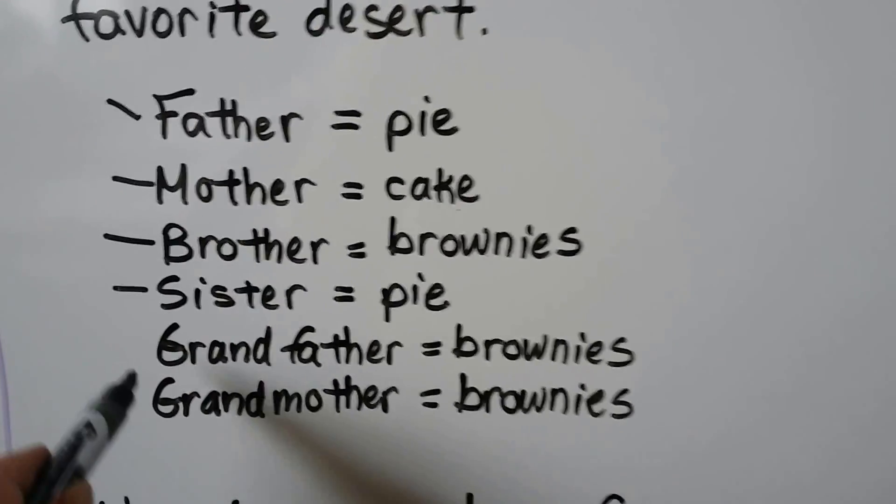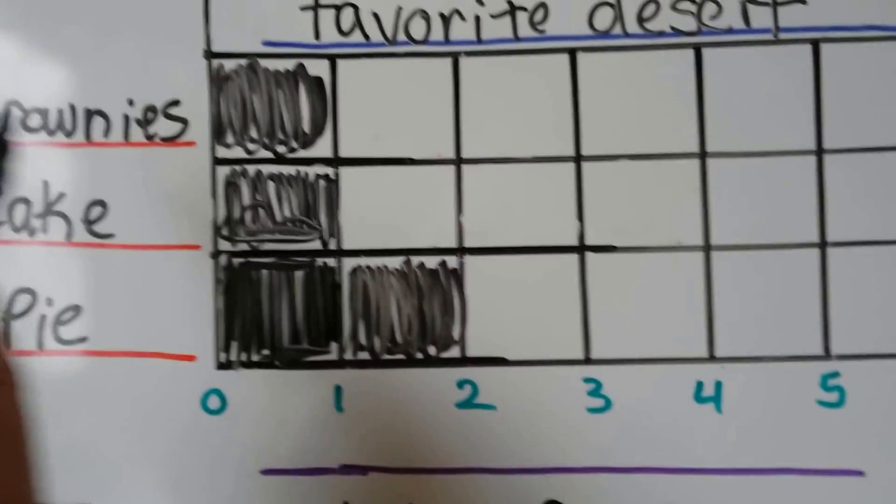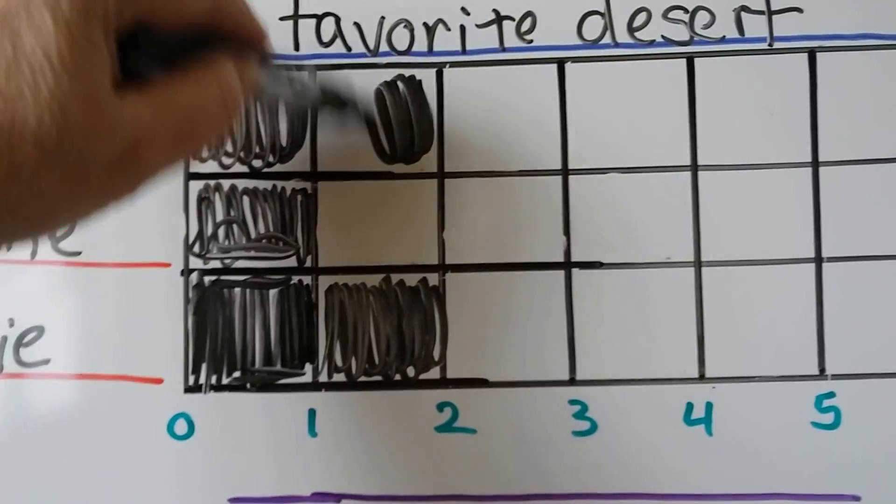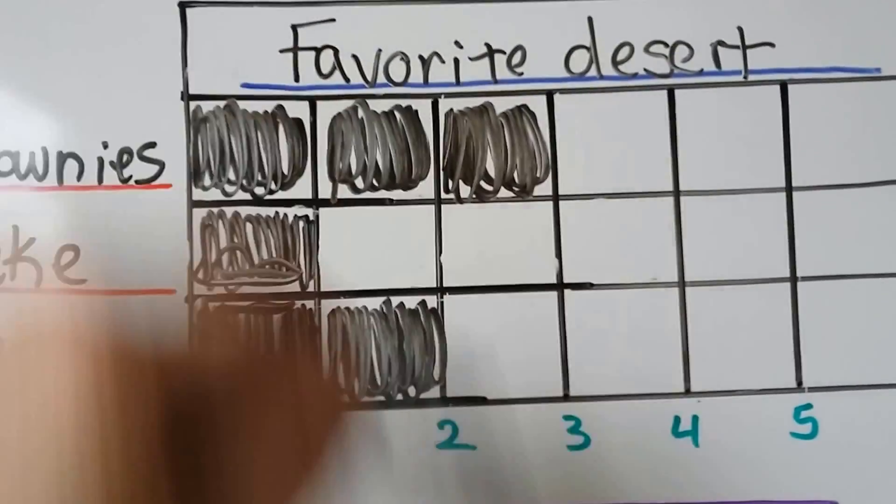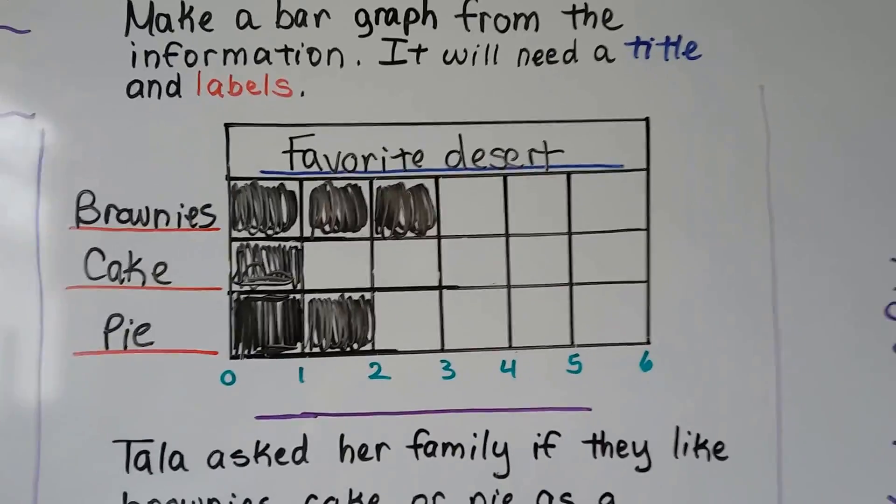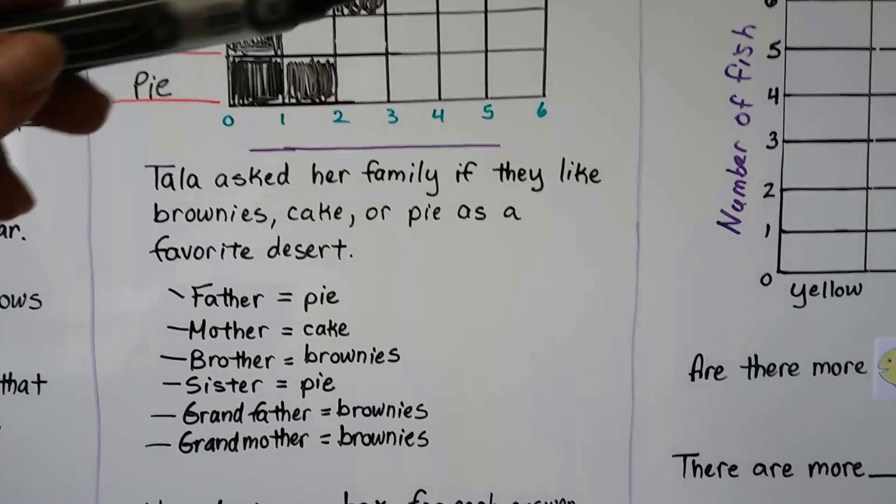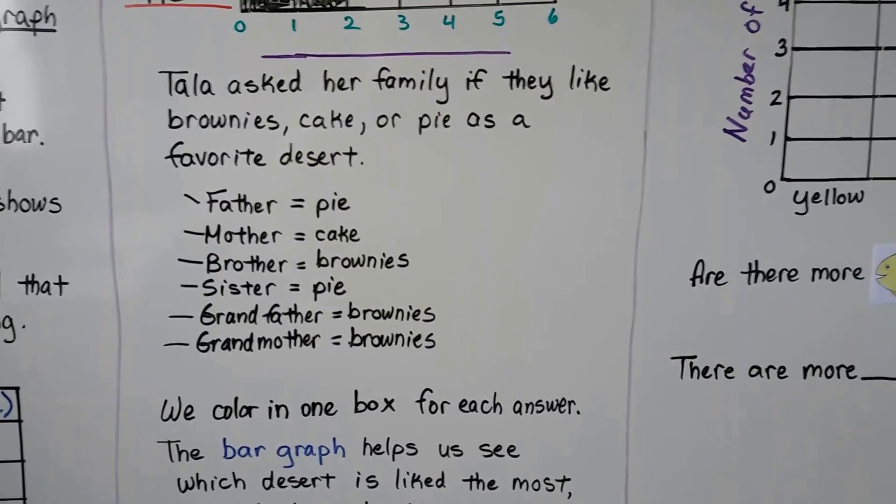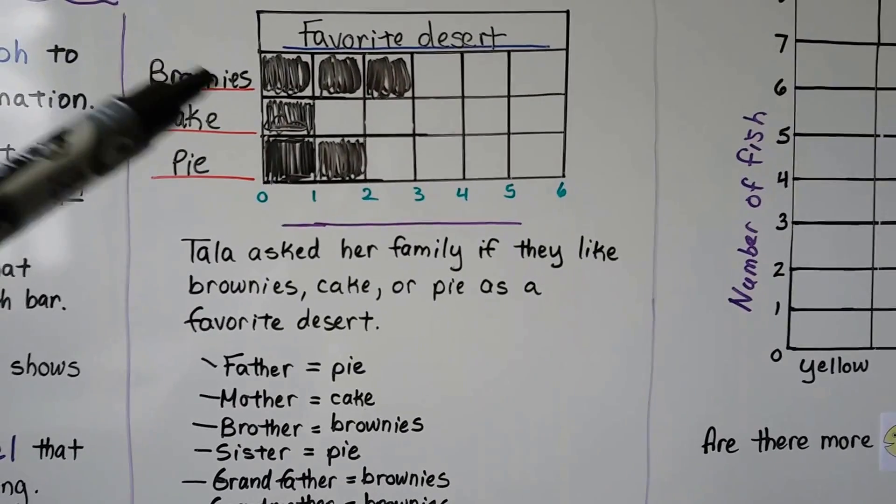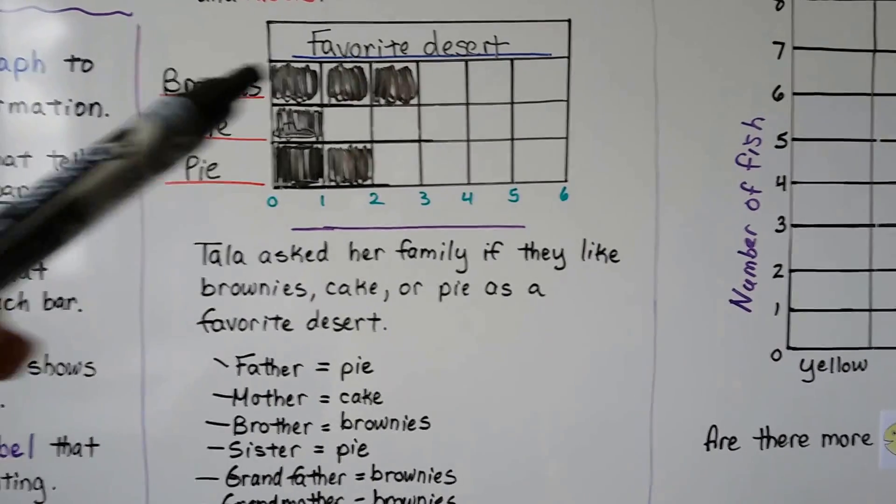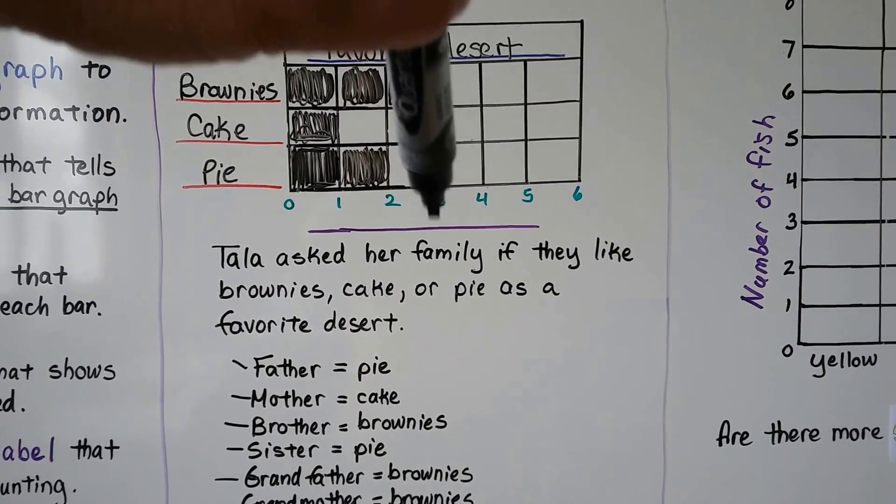And her grandfather and grandmother both like brownies. So we have two votes for brownies. So we're doing these. I'm going to put two for brownies. We're going to fill in two squares, one for the grandfather and one for the grandmother. We color in one box for each answer. And the bar graph helps us see which dessert is liked the most and which is liked the least. So we can see that her family likes brownies the most. That's the bar that's sticking out the most.